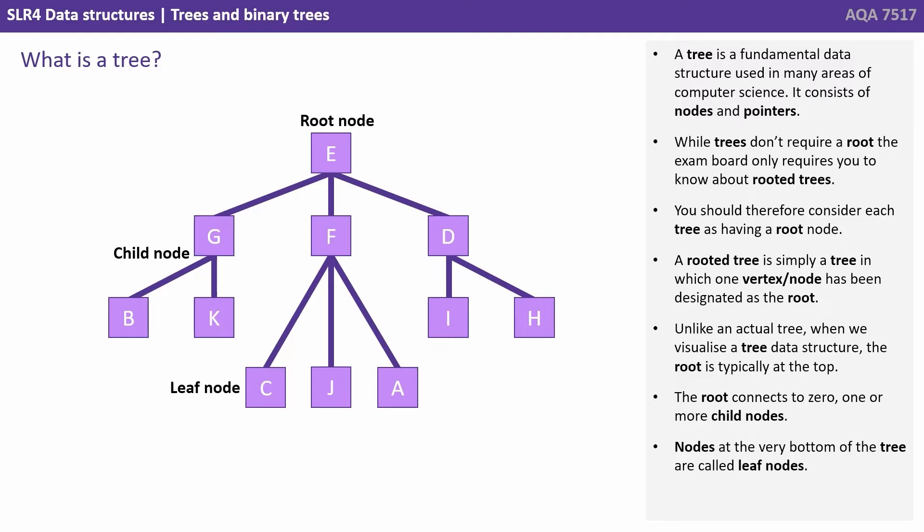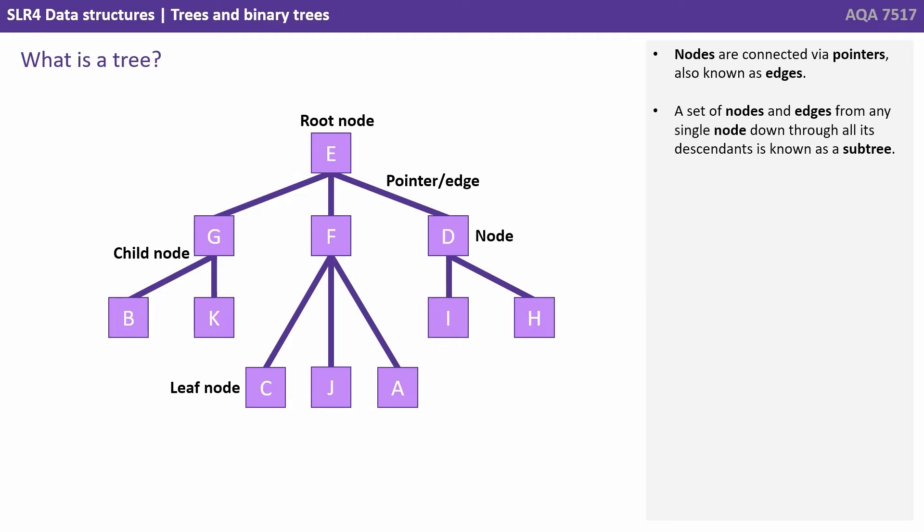Nodes at the very bottom of the tree can be called leaf nodes. Nodes are connected via pointers, also known as edges.